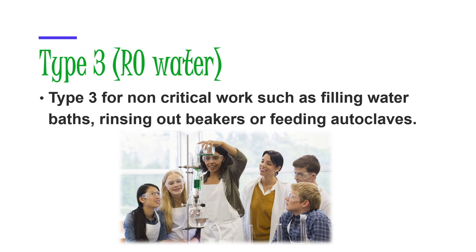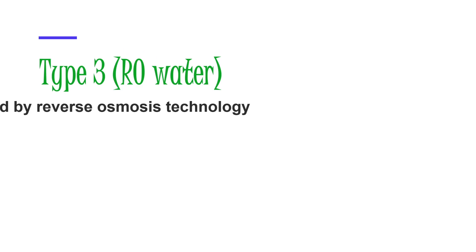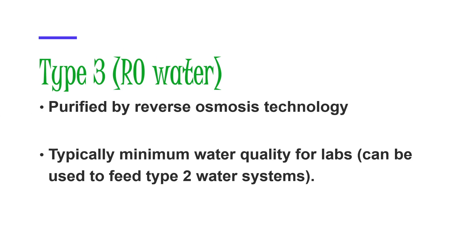Type 3 water is referred to as RO water, which stands for reverse osmosis water. It's used for non-critical work such as filling water baths, rinsing out beakers, or feeding water clouds. These are achieved through reverse osmosis technology and represent your minimum water quality for labs. They are further purified to provide Type 2, and Type 2 is further purified to provide Type 1 water for high-sensitivity assays.